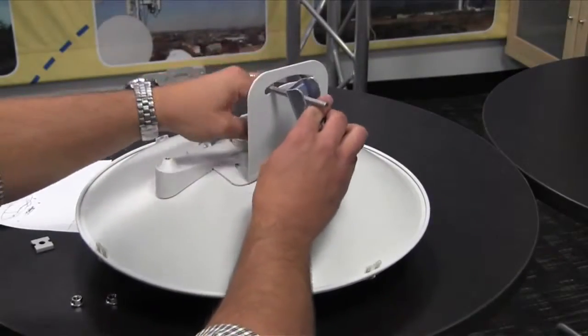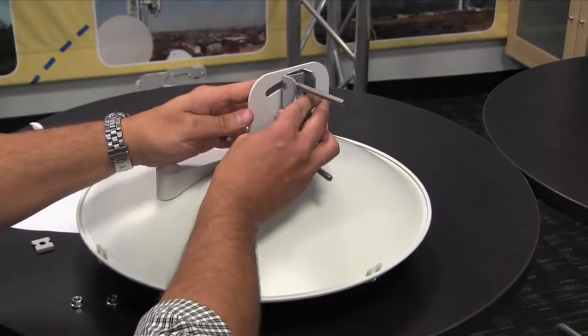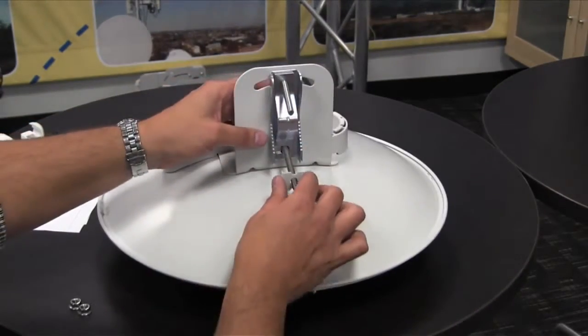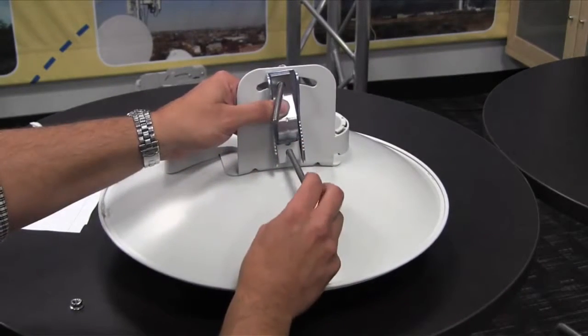Attach the pole bracket assembly to the mounting hardware. Insert the retainer and attach the bolts.